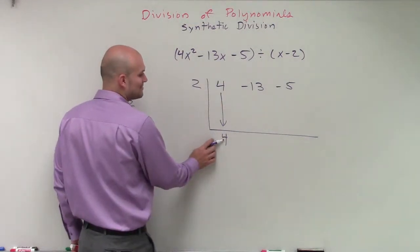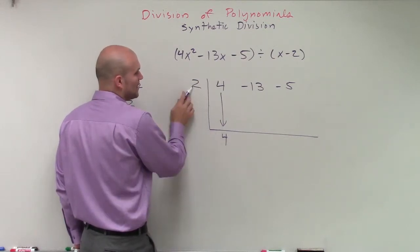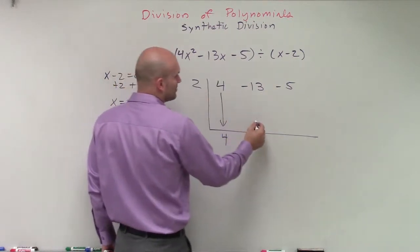Then we take this bottom term. We multiply it by what we're going to call our zero. So 4 times 2 is 8. And then we're going to place that right here.